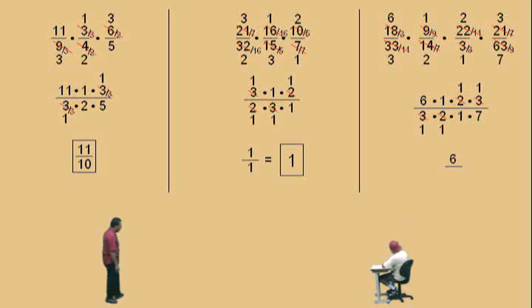That's right. On the bottom, you have 1 times 1 times 1 times 7, which is what? 7. 6 7's. There you go. So there is your answer there.